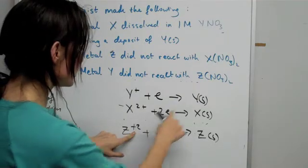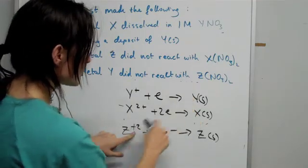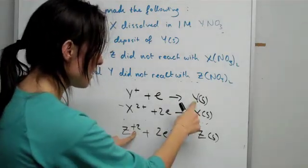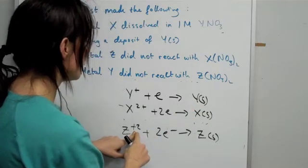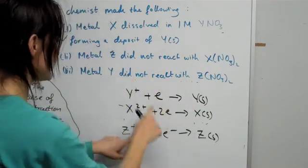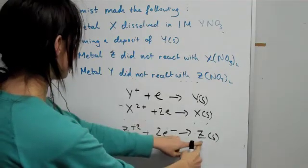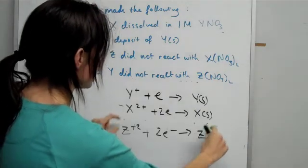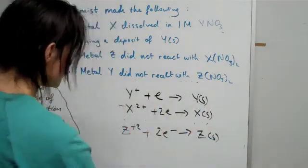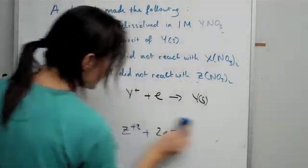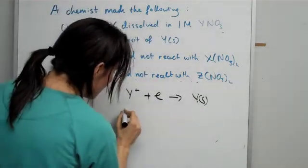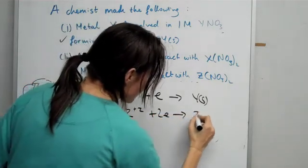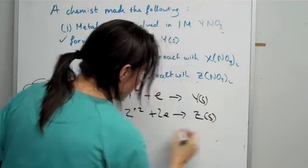So here you have the salt of Z, and Y could not react. So it works at the moment. Z will not react with Y, but metal Z does not react with X either. So that tells you this equation must be somewhere in between here. Let me just write it up and see if it works. This is just a lot of trial and error.